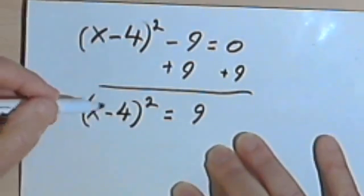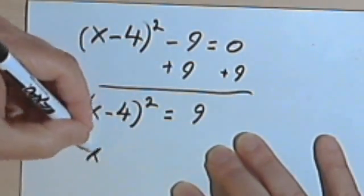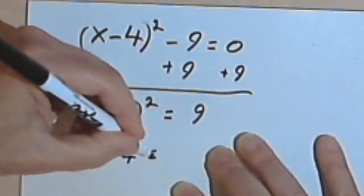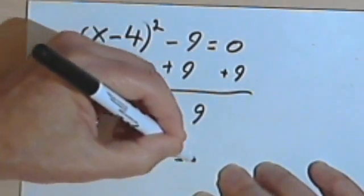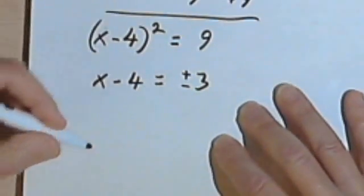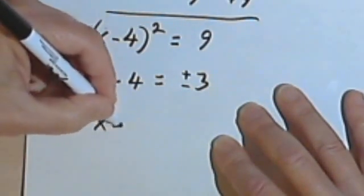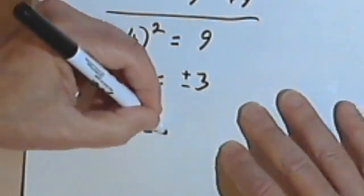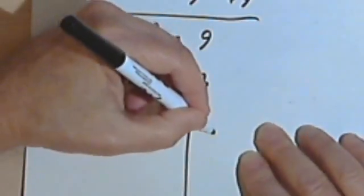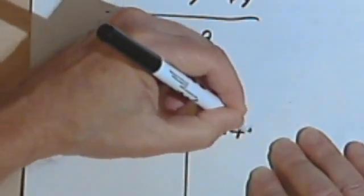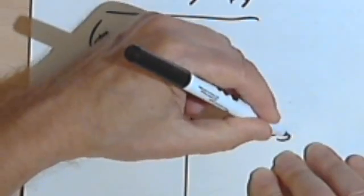And then, as before, I'll take the square root of both sides. I'll have x minus 4 equals plus or minus 3. And I'll break this down into two equations. x minus 4 equals positive 3 and x minus 4 equals negative 3.